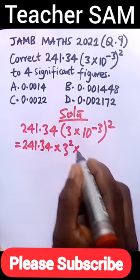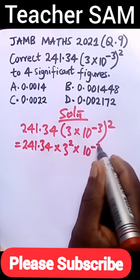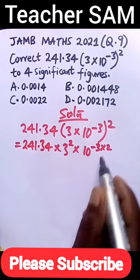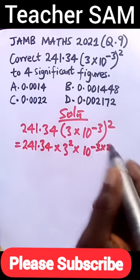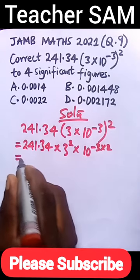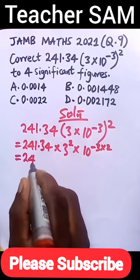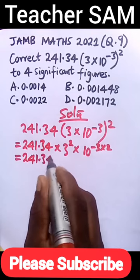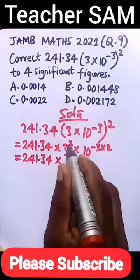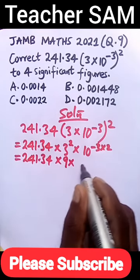So 3 raised to power 2, times 10 raised to power -3 times 2, using the power rule. This equals 241.34 times 3^2, which is 9, times 10^-6.